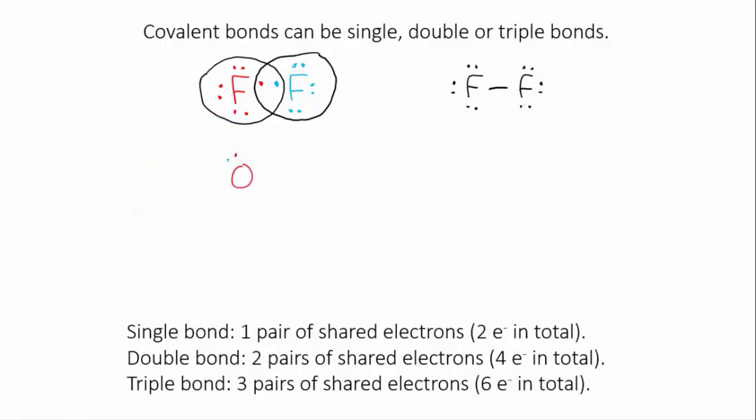Oxygen has six valence electrons. It requires two more for a full outer shell. When a diatomic oxygen molecule forms, each atom requires two more electrons. So when the atoms get together, rather than simply sharing one electron each, they share two each. This means two pairs of electrons are involved in the bond, and we call this a double bond. For convenience, we draw it as two parallel lines, with each line representing a pair of electrons.